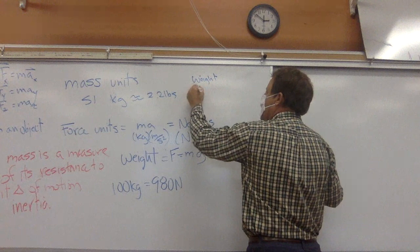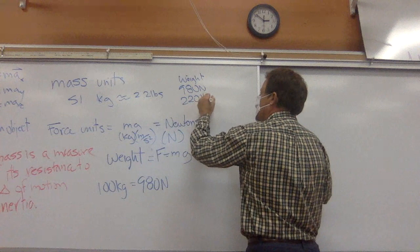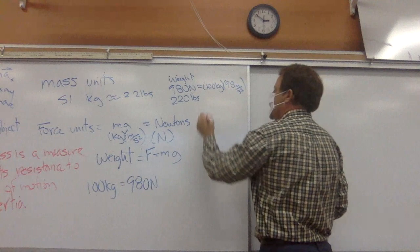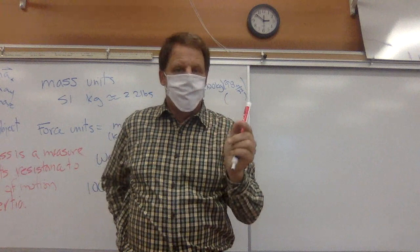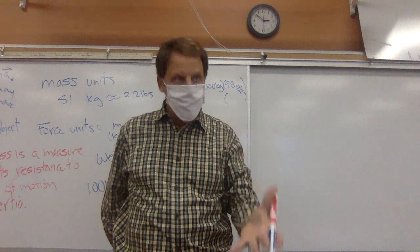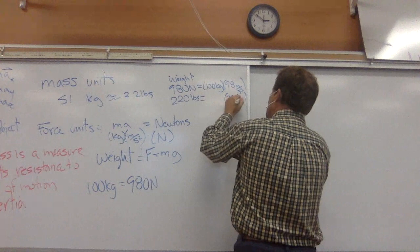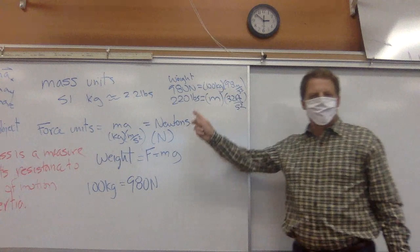My weight equals 980 Newtons, which is 220 pounds, which equals 100 kilograms times 9.8 meters per second squared. Do you know what the acceleration due to gravity is in imperial units in feet? It's 32 feet per second squared.